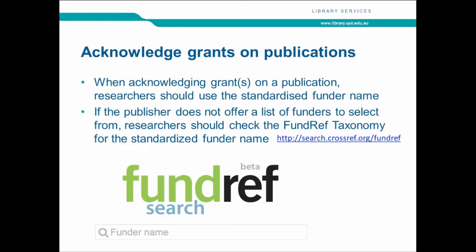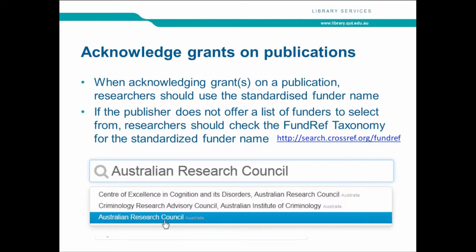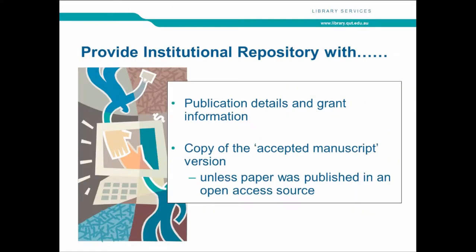They also need to acknowledge the grant on the publication. When submitting a manuscript to a journal, they need to put the name of the funder and the grant ID. Some publishers offer a taxonomy or controlled vocabulary of funder names, but if they don't, we should encourage researchers to use a standard form of the funder's name. FundRef is a taxonomy readily available, created by the Crossref people, so researchers can type in a funder name and get the standard form to use. They must also provide the institutional repository with publication details, grant information, and a copy of the accepted manuscript unless published in an open access source.